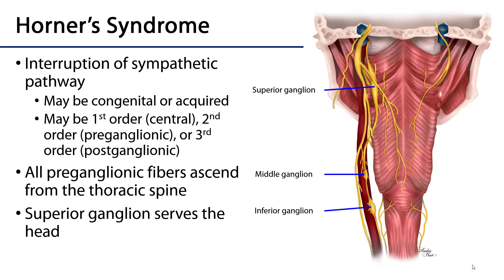Horner syndrome is the effect of an interruption of the sympathetic pathway. This may either be congenital — so at birth — or acquired. There are different types depending on which part of the pathway is affected. If it's a disruption within the central nervous system it is first order; a disruption of the pre-ganglionic fibers is second order; and of the post-ganglionic fibers it is third order. Keep in mind that all pre-ganglionic fibers serving any of the cervical sympathetic ganglia ascend from the thoracic spine, so it's not just the cervical region but also an interruption in the thoracic region that could produce Horner's.